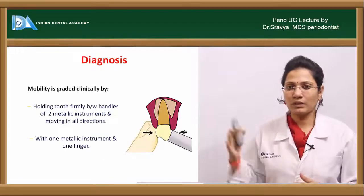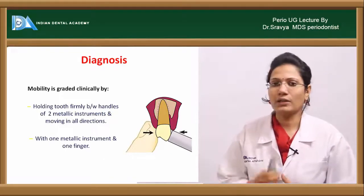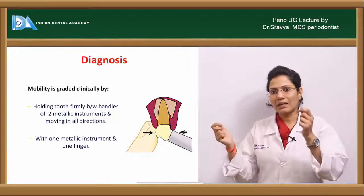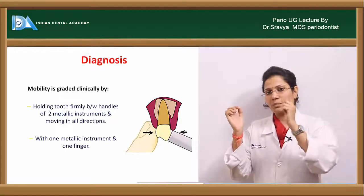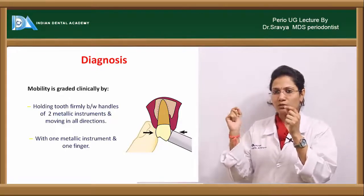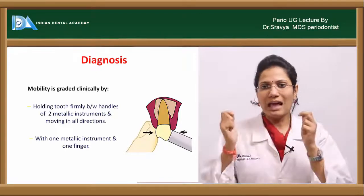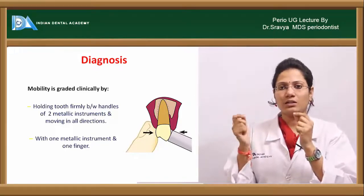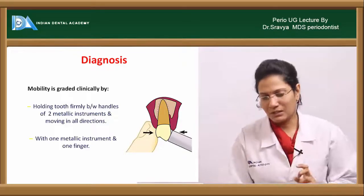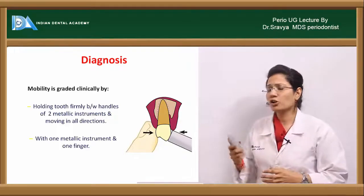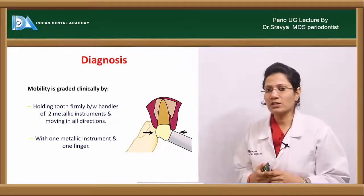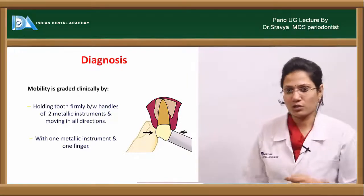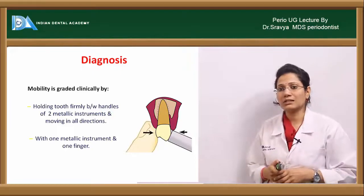How do you diagnose tooth mobility? Clinically, you can use two blunt ends of an instrument — one placed on the palatal surface and one on the buccal surface of the tooth. One end is stabilized while the other detects the movement of mobility. Alternatively, you can use one finger and one blunt end of an instrument to detect it clinically.